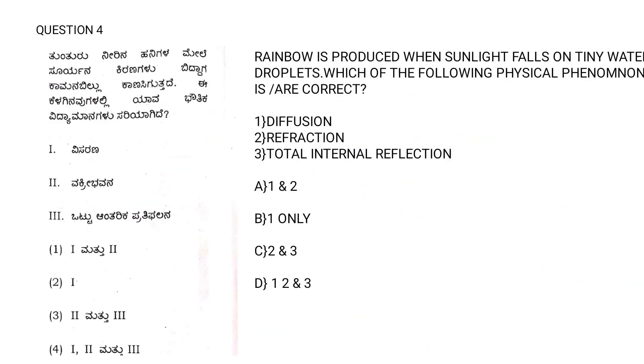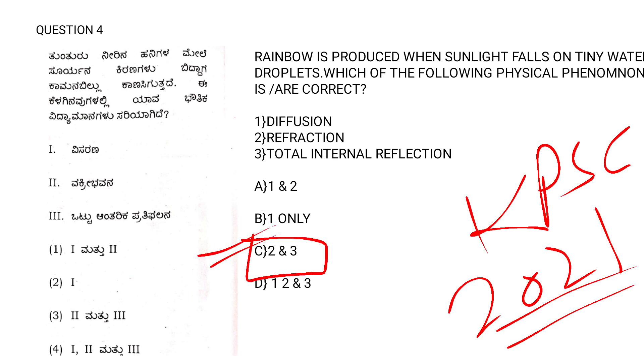Let's move on to the next question. Question number four: rainbow is produced when sunlight falls on a tiny water droplets. Which of the following physical phenomena happen? Here the options are diffusion, refraction, total internal reflection. The options are one and two only, one only, two and three, one two and three. Do remember this question was asked in KPSC 2021 Group C examination. Here the answer is two and three, that is refraction and total internal reflection.